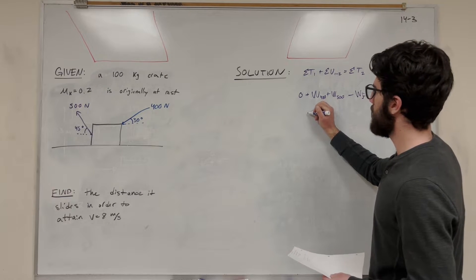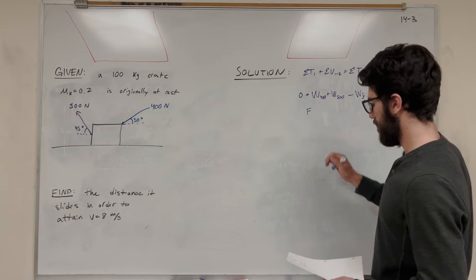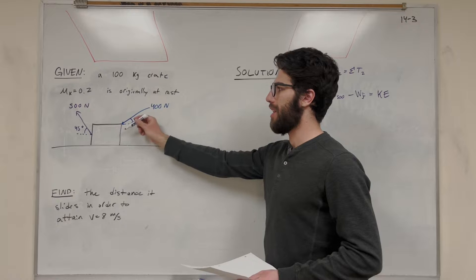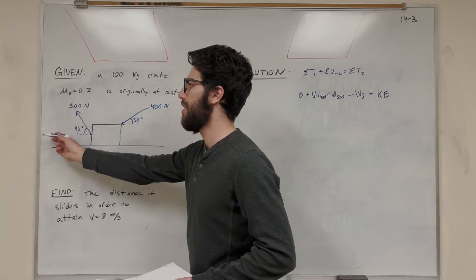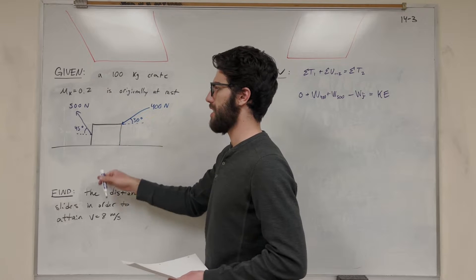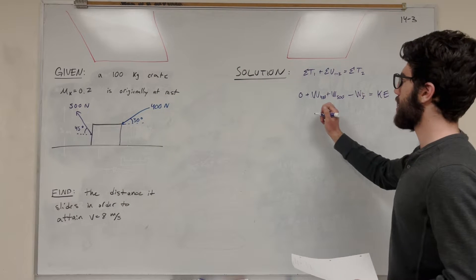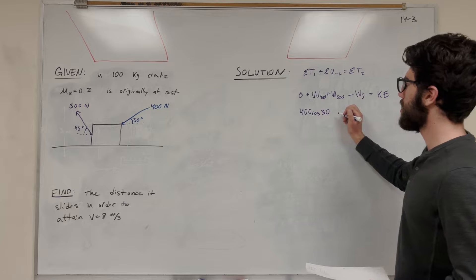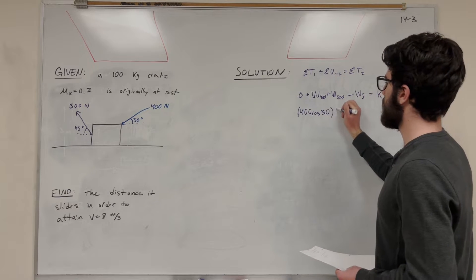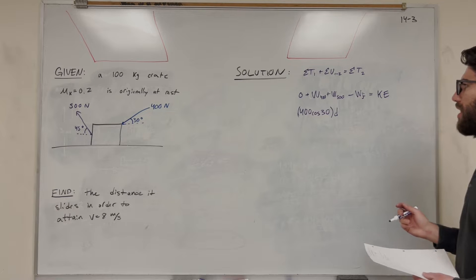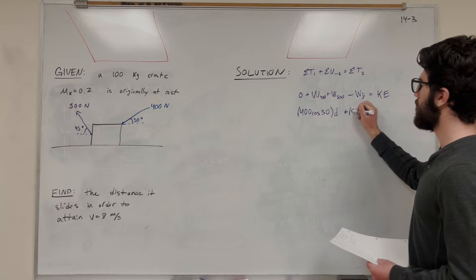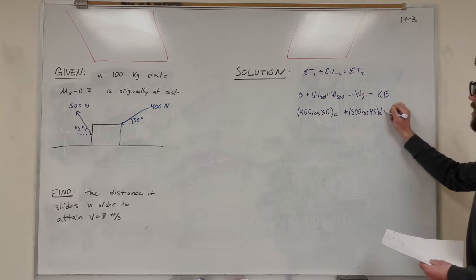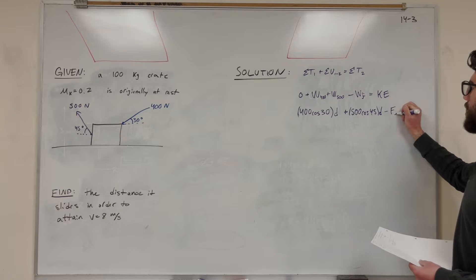Work is force times distance. We're looking at the force, but it's applying at an angle. We're only interested in the force in the direction of motion — if we're pushing it down, it's not going to move any distance down. So we have to make sure we're only applying the force in the x-direction. 400 cosine of 30 gives us that x-direction force, multiplied by distance. Same with the 500: that's going to be 500 cosine of 45 times distance. Minus the friction force times distance.